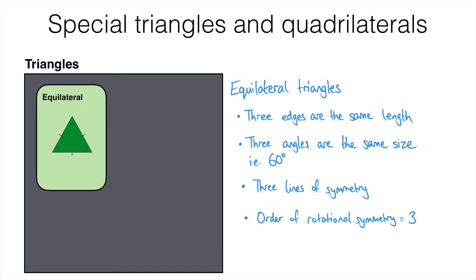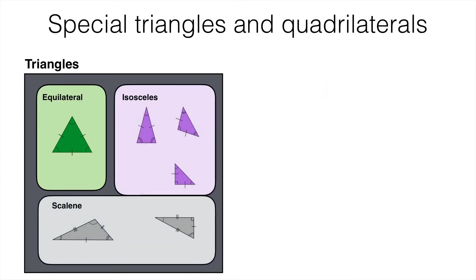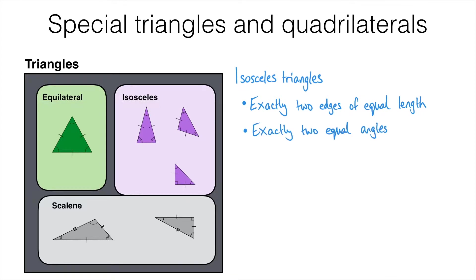So the equilateral triangle is the first of the special triangles we are looking at. Next we have isosceles triangles. Isosceles triangles have exactly two sides or edges of equal length, indicated by these dashes. They also have exactly two equal angles out of the three angles altogether. Remember these angle markers show that those two angles are the same. Isosceles triangles have exactly one line of symmetry and no rotational symmetry, meaning the order of rotational symmetry is one — the triangle only fits on itself once in a full turn, at its starting position.